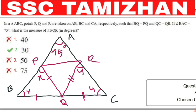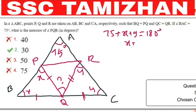Now we have to find angle PQR. In triangle ABC, setting angle values: let angle PBQ equal x and angle QCR equal y. Then 75 plus x plus y is equal to 180 degrees, so x plus y is equal to 105 degrees.